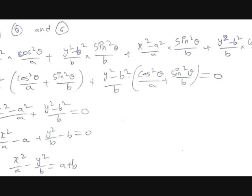Adding equations 5 and 6, the 2xy/AB·sinθ·cosθ terms cancel out. We get (x² − A²)/A²·cos²θ + (y² − B²)/B²·sin²θ from equation 5, and (x² − A²)/AB·sin²θ + (y² − B²)/AB·cos²θ from equation 6. Writing A² as A·A and B² as B·B allows us to factor these expressions.